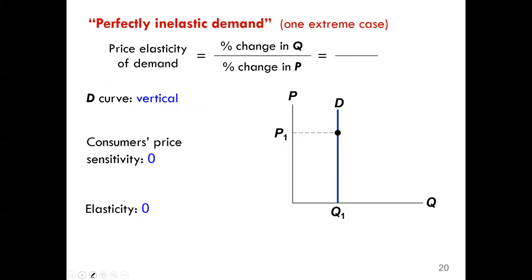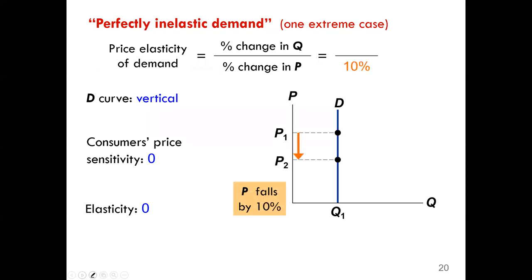We start with perfectly inelastic demand. The demand curve is vertical, meaning that at various prices the quantity demanded is the same — quantity does not respond to changes in price. The elasticity is zero. If price changes from P1 to P2 by 10 percent, the percentage change in quantity demanded is zero, so zero divided by 10 percent equals zero.